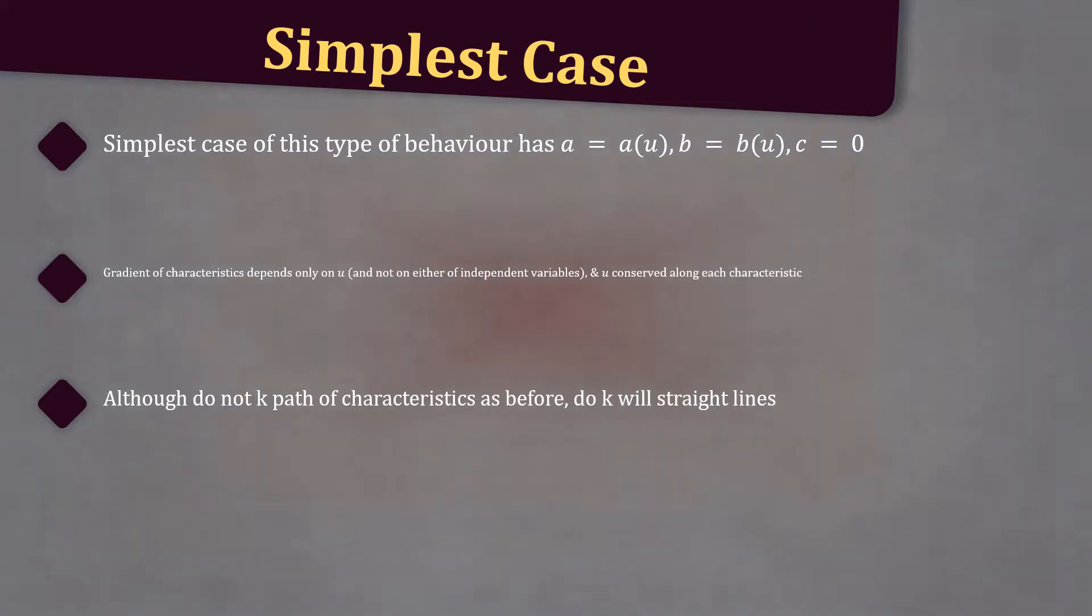Although we do not know the path of the characteristics as before, we do know that they will be straight lines. The values of u, and hence the gradient, will be determined by the value at the initial or boundary condition.